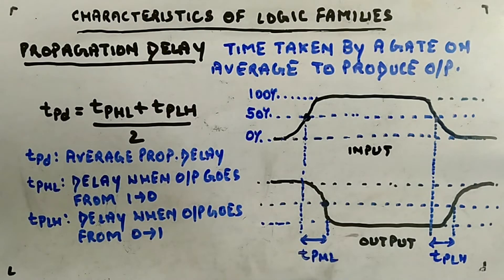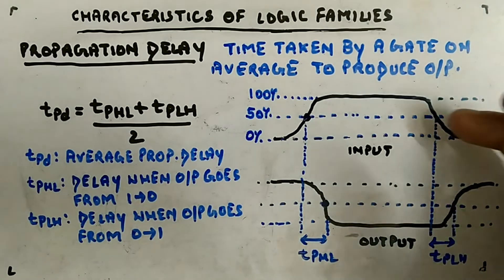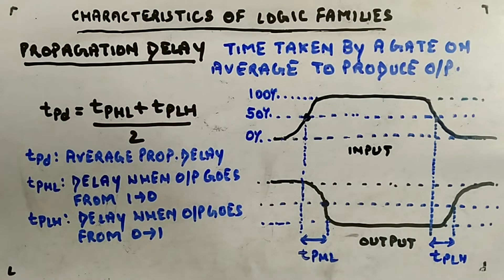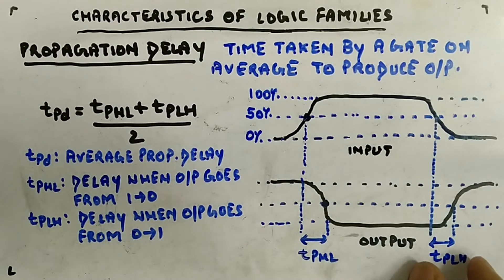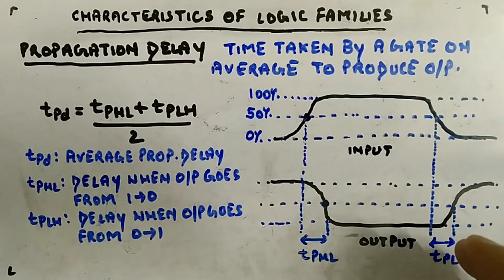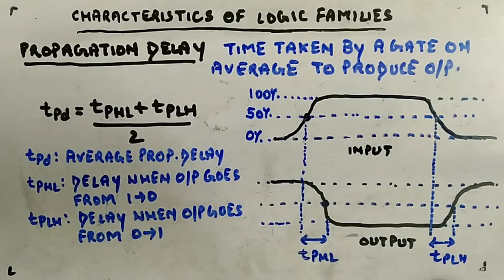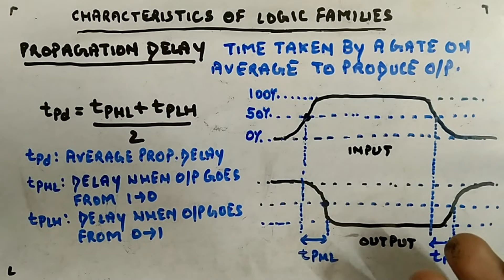Similarly, when the input goes from one to zero, the output goes from zero to one. Measure from the 50% point of the input to the 50% point of the output — that difference is TPLH (low-to-high output transition). The average of TPHL and TPLH gives the average propagation delay of the gate for a particular input. Lesser propagation delay means better performance.